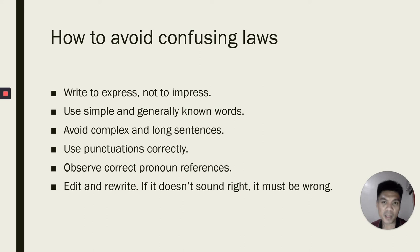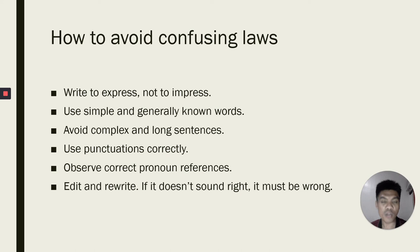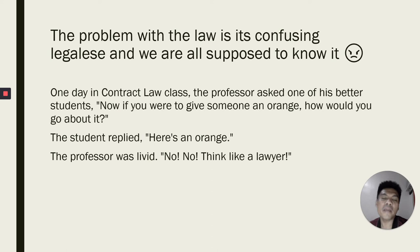Also, observe correct pronoun references. Some enumerations in the law can include men and women, singular and plural numbers. So, by using the correct pronouns, we can find the references for these pronouns and therefore avoid confusion. Next is, edit and rewrite. The rule of thumb has always been: if it doesn't sound right, it must be wrong. The problem with the law has always been its confusing legalese, and we are all supposed to know it.